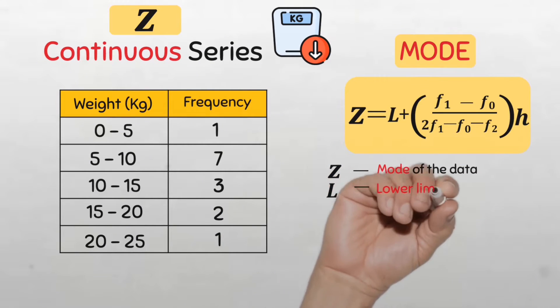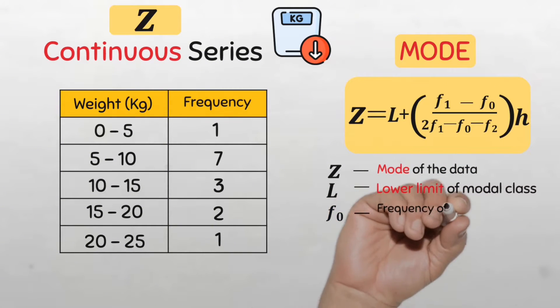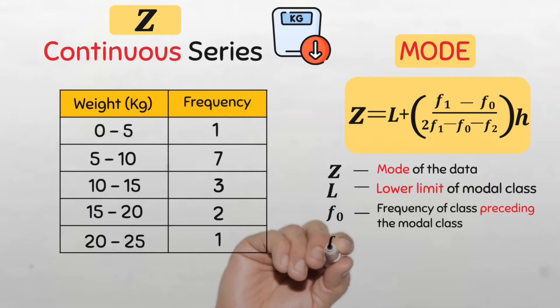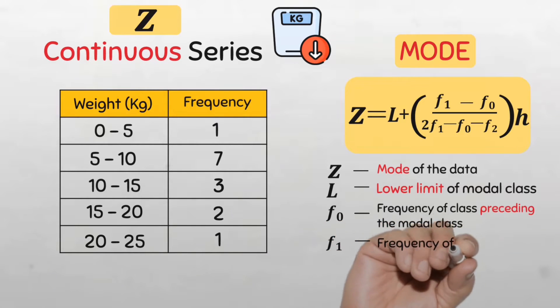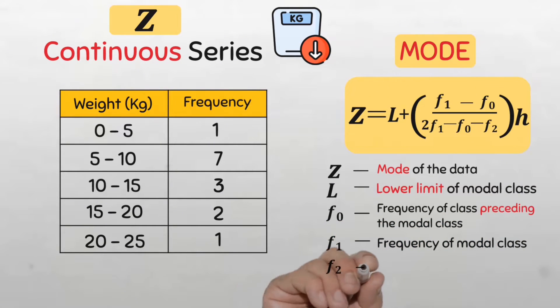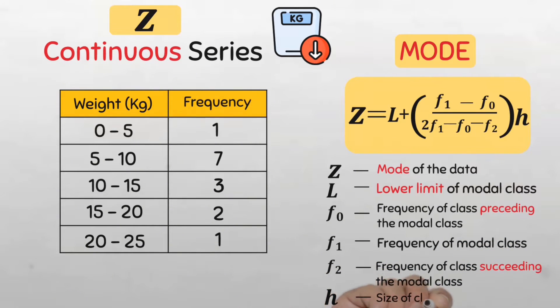Here Z represents the mode, L is the lower limit of the modal class, f sub 0 is the frequency of the class preceding the modal class, f sub 1 is the frequency of the modal class, f sub 2 is the frequency of the class succeeding the modal class, and h is the size of the class interval.